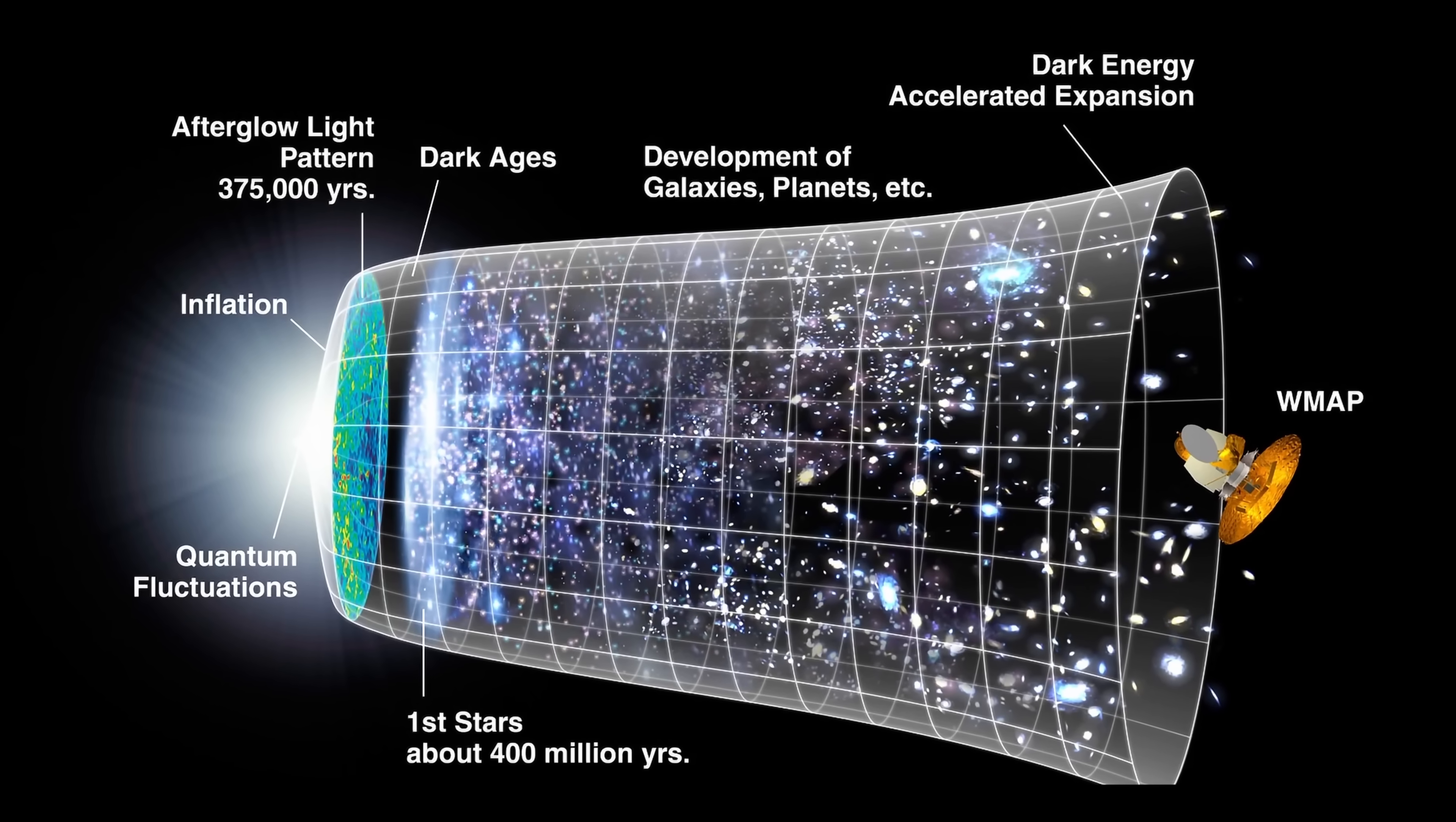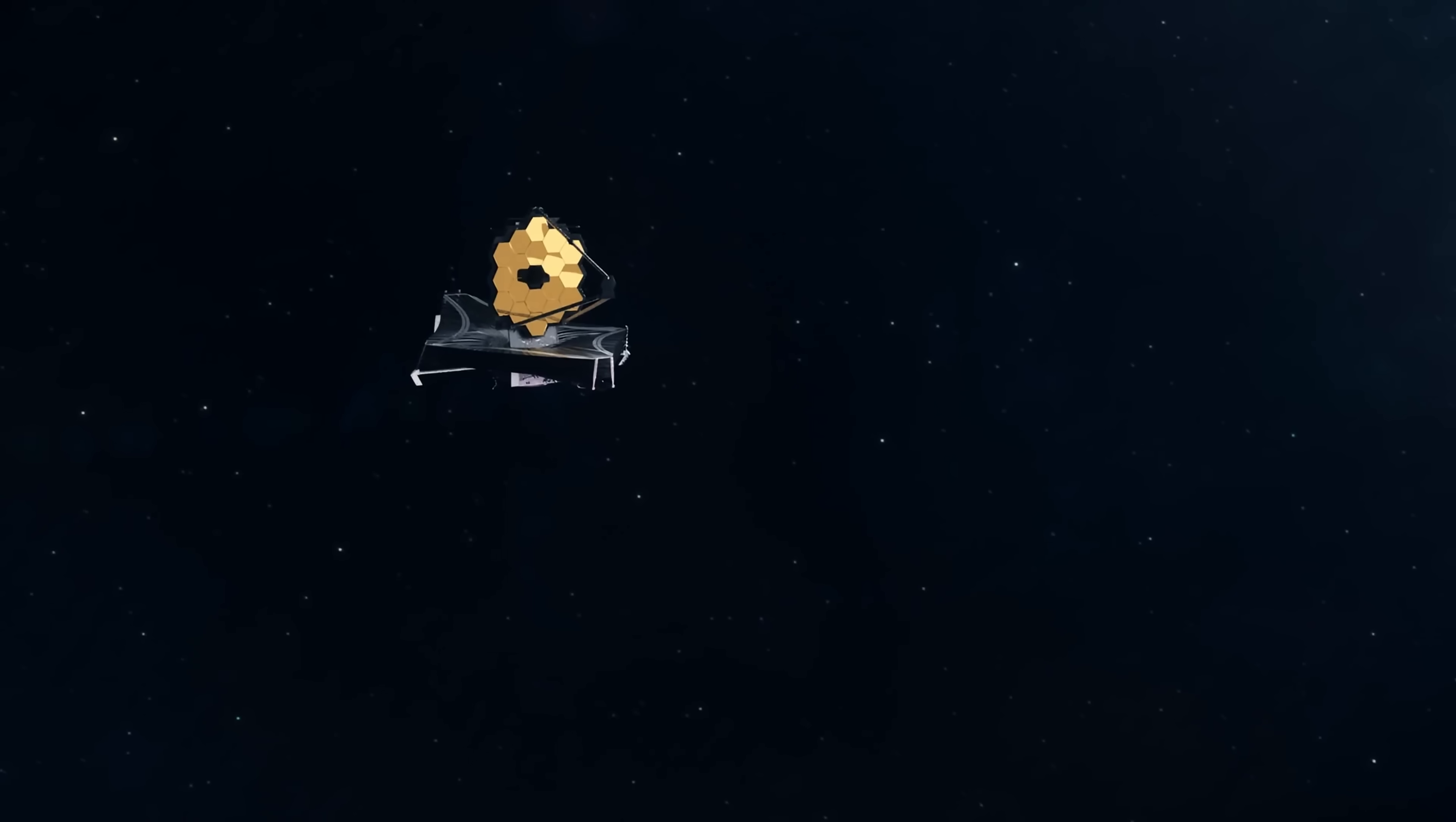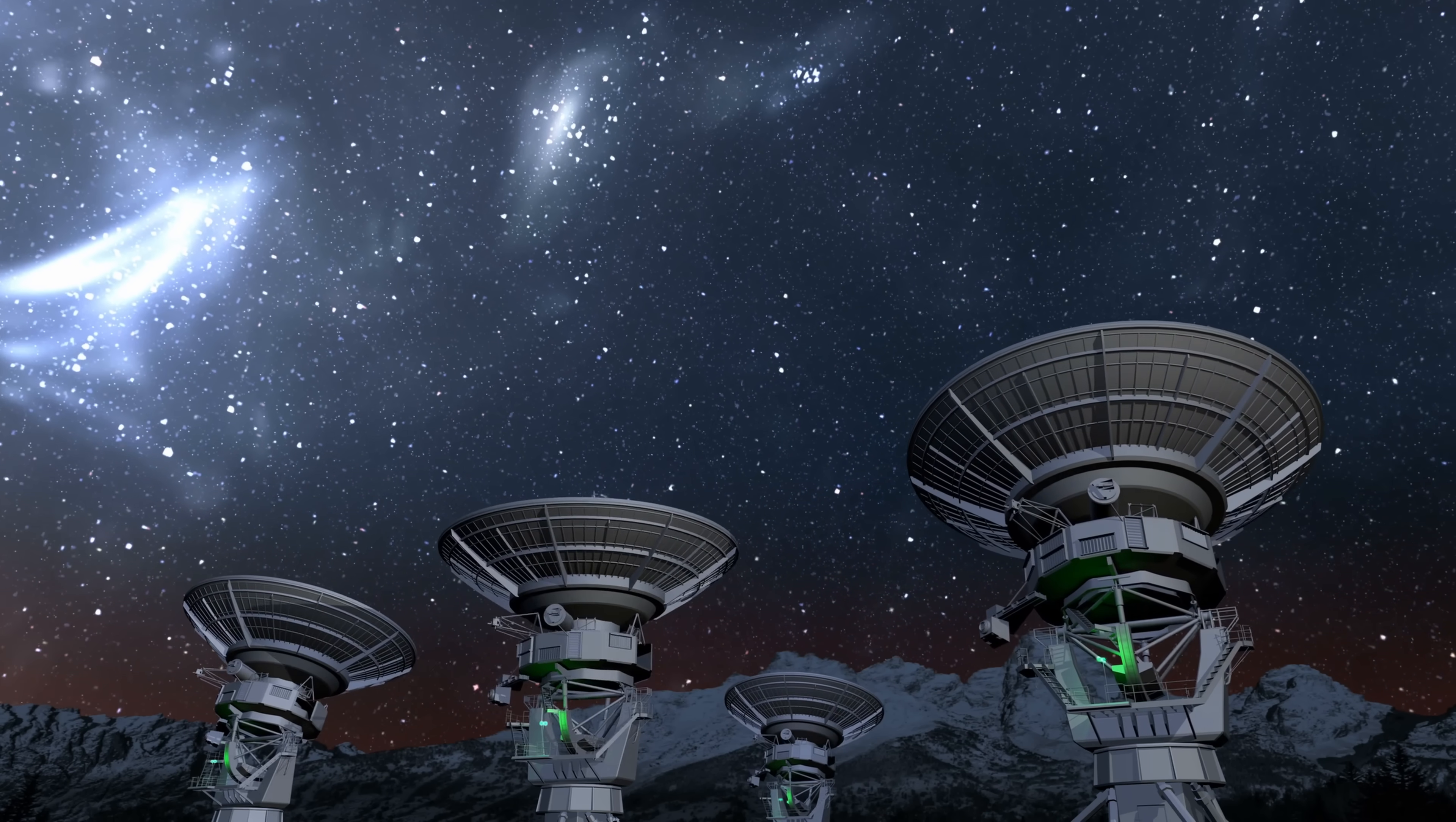Reionization was caused by dwarf galaxies very similar to objects we discovered in the last few years, such as for example those green peas. One mystery down, a few more to go. And so at least for now this is probably one of the more important discoveries coming out of James Webb when it comes to cosmological studies. But it will definitely take at least a couple of years to confirm all of this.